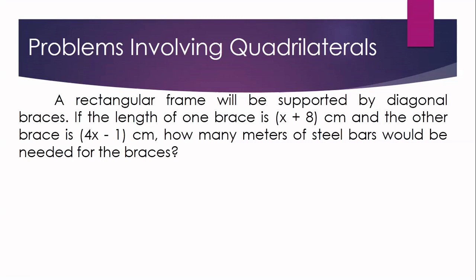What quadrilateral is stated in the problem? In the problem, we are talking here of a rectangle. What theorem will you apply to solve it? The given is diagonal 1, which is x plus 8 centimeters, and diagonal 2, which is 4x minus 1 centimeters.